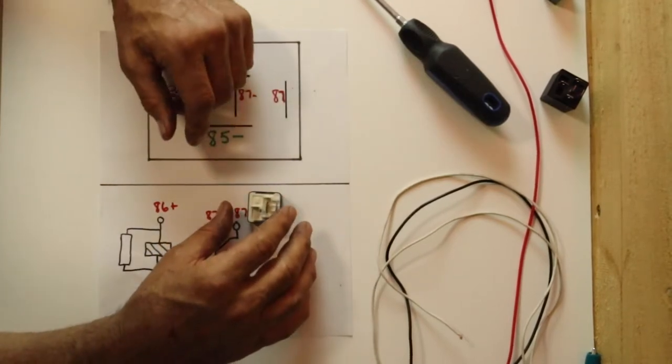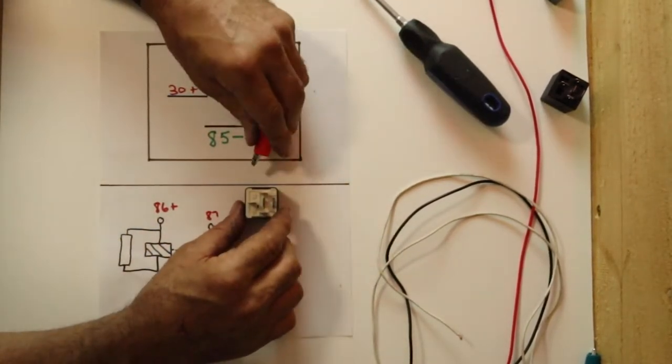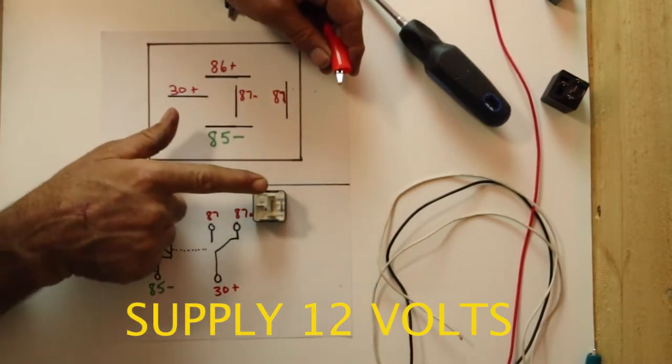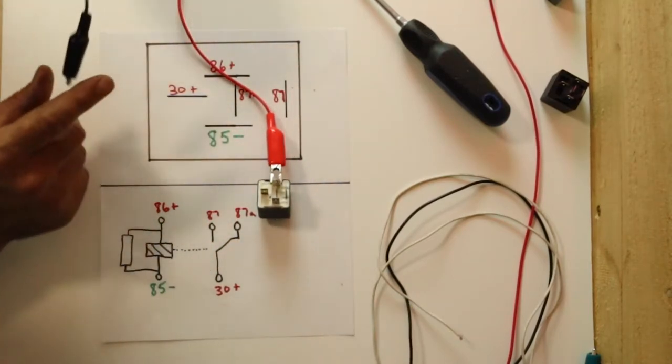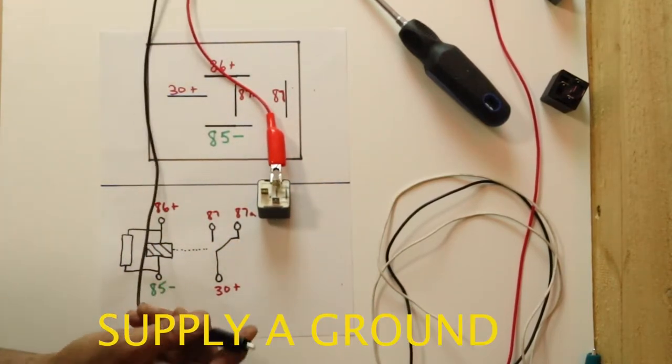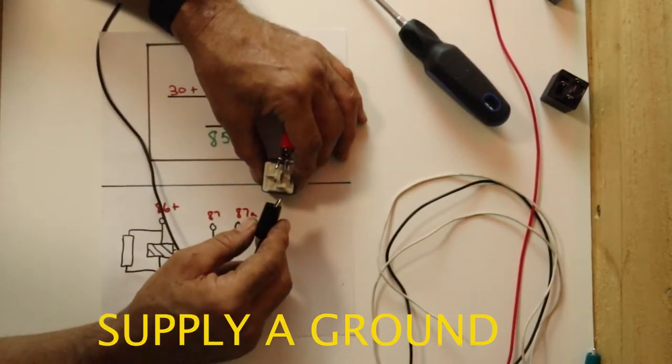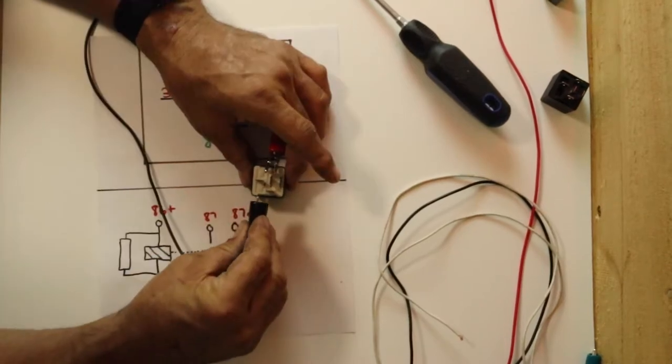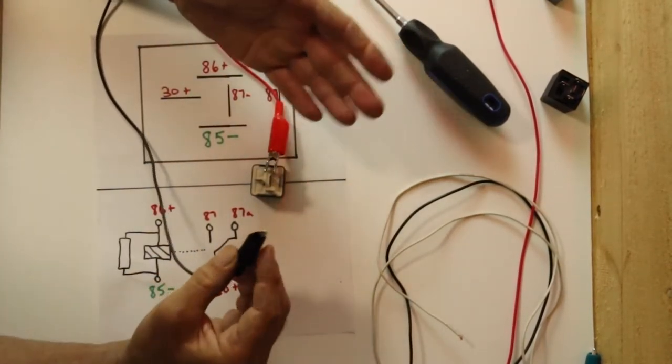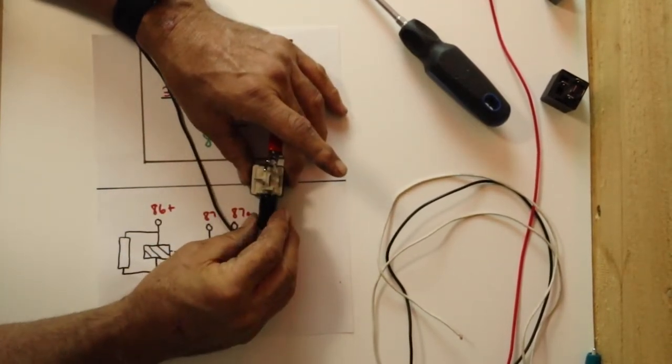The next thing you're going to do is you want to activate this relay. So we want to take pin number 86, which is this pin right here. And we want to take pin number 85, which is this pin right here. You want to touch it. You should hear a click. The relay should click off and on. Once you hear a click, you know that you can activate the control circuit. So there's no problem there. So go ahead and activate the relay.